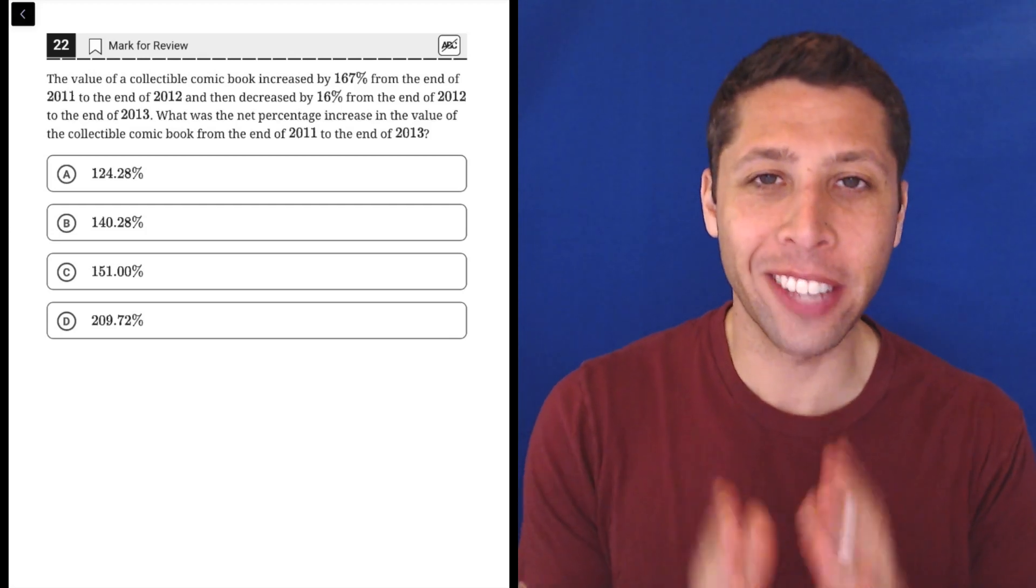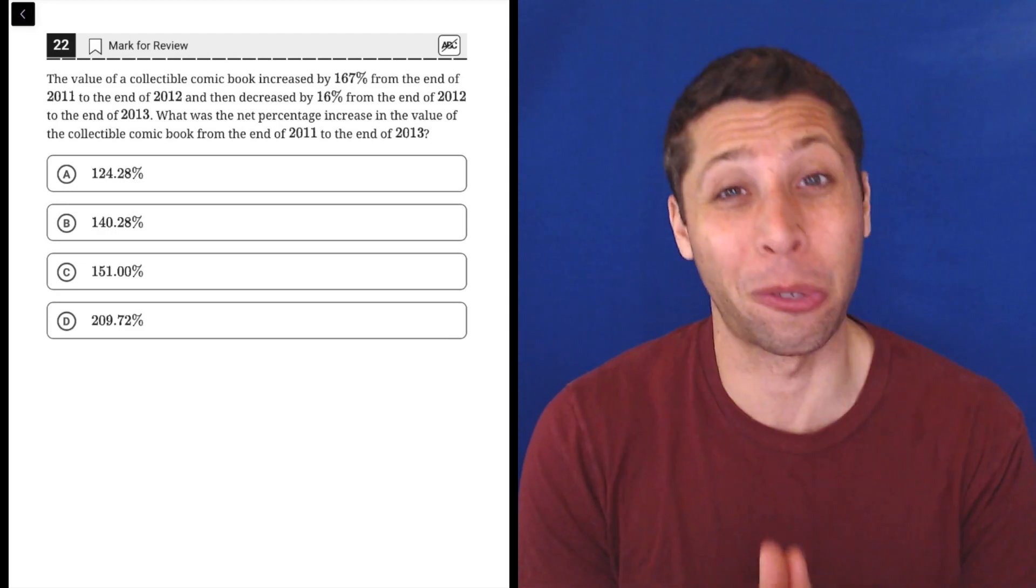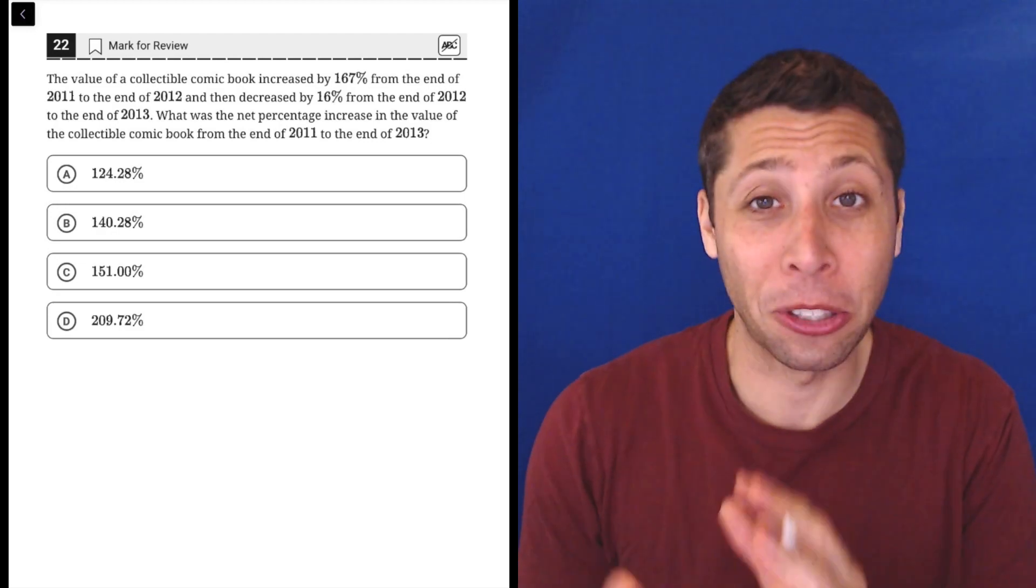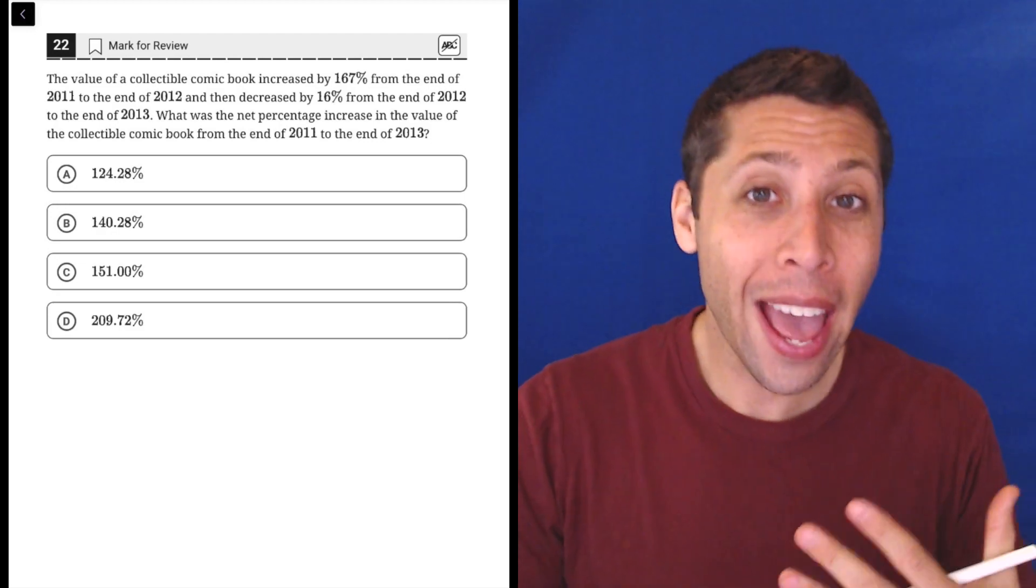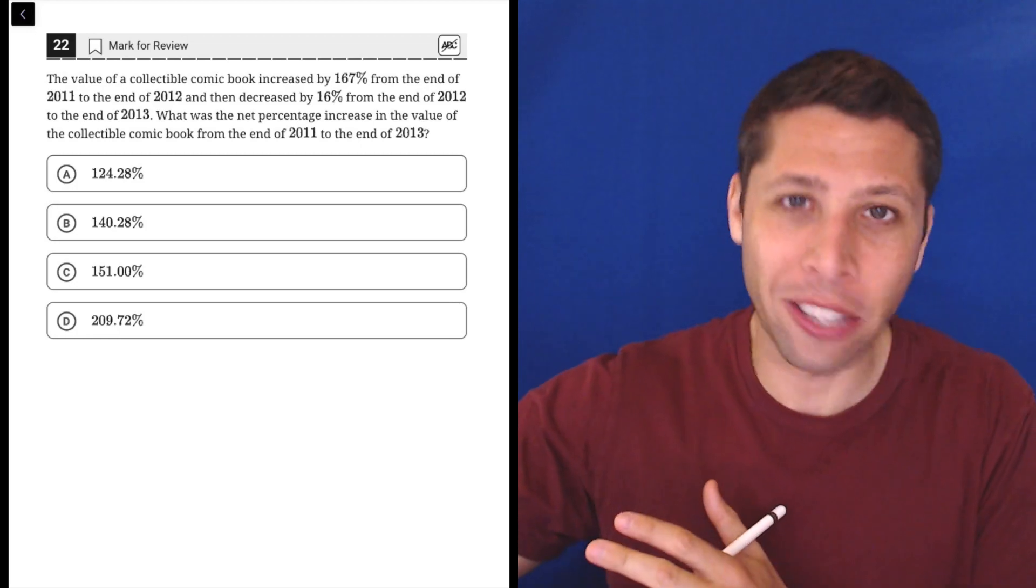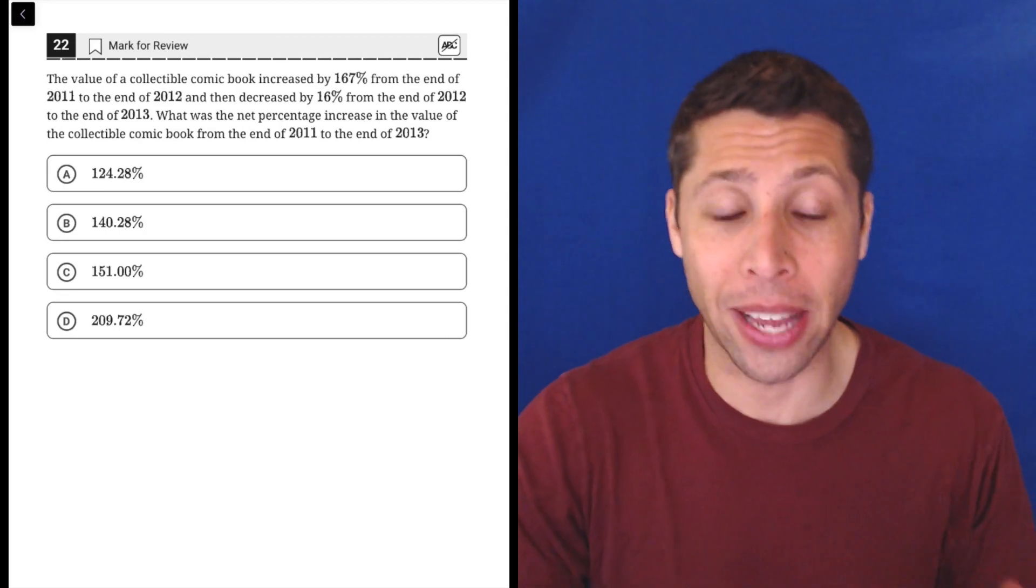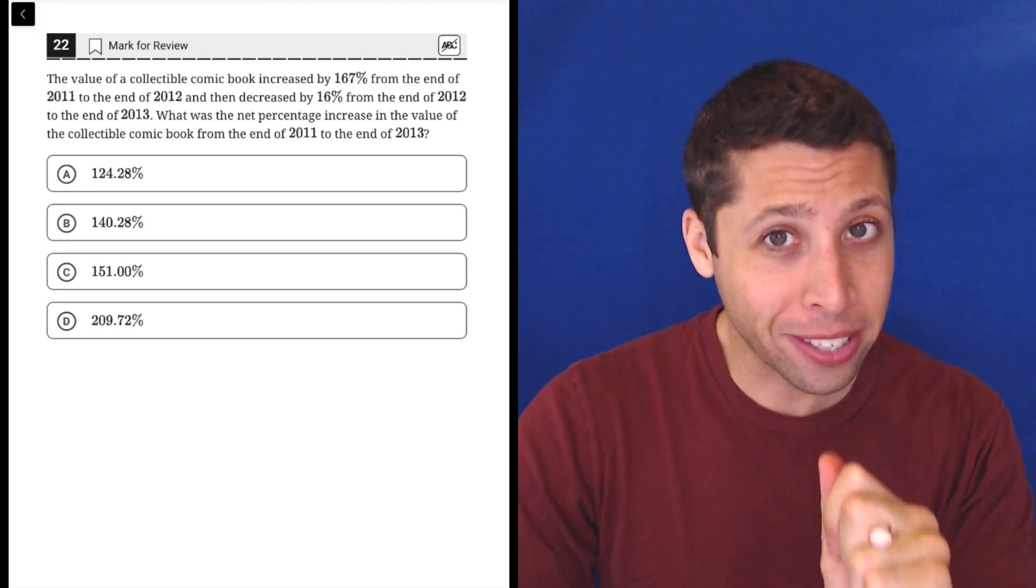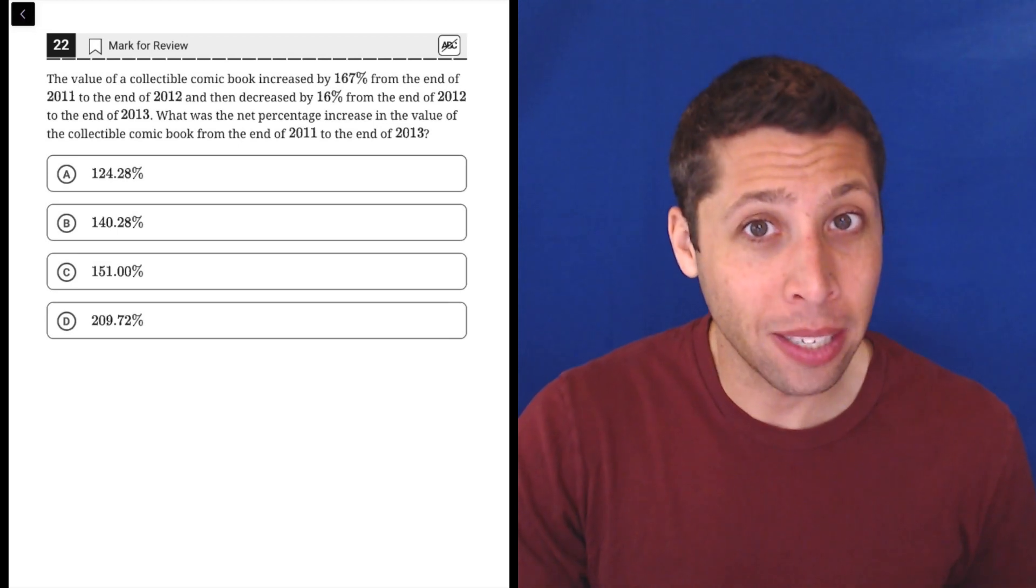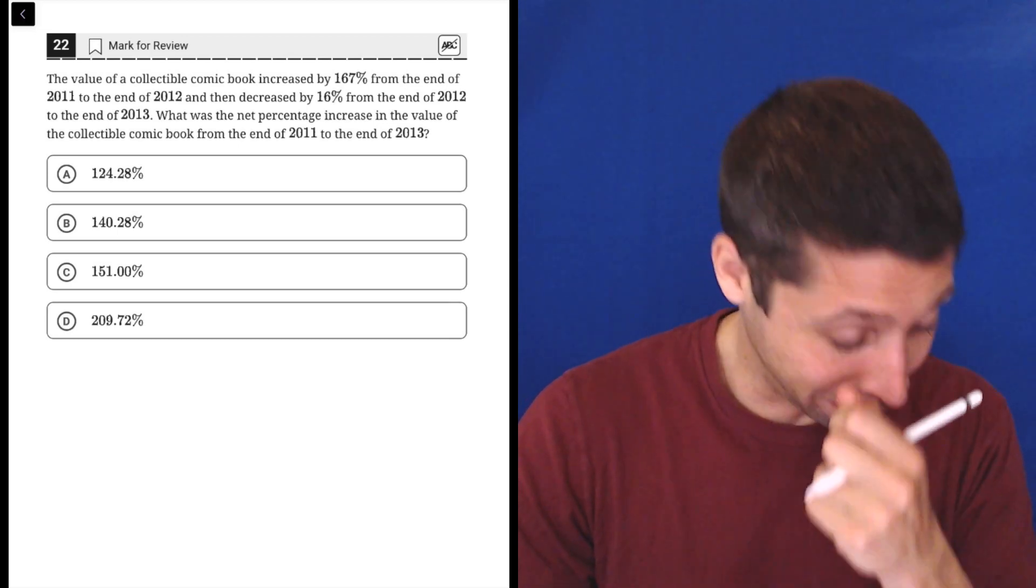Alright, we're at the last question of the section, and the most important thing to know about the last question is it's probably going to be the hardest question. At least the last five or so are going to be up there. So it's okay if at this point you're starting to skip or guess randomly. Just make sure you get everything else right that's earlier, and you still have a really good shot at a good score. So it's okay to skip things. Just don't leave them blank, but it's okay to skip. This is hard, and I doubt many eighth or ninth graders know how to do this. So don't feel bad if that's one of you.